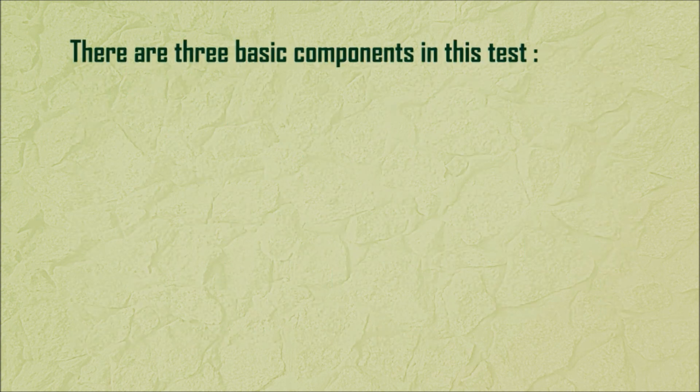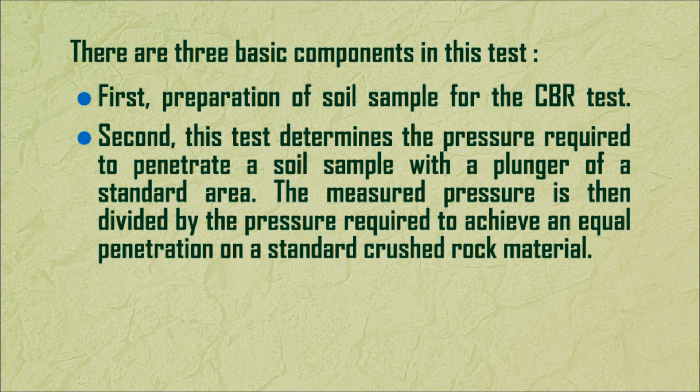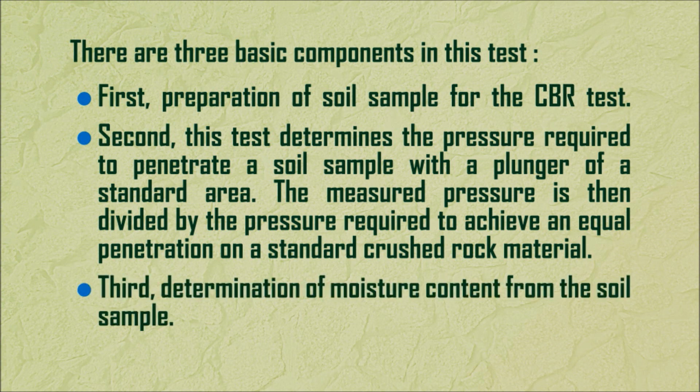There are three basic components in this test. First, preparation of soil sample for the CBR test. Second, this test determines the pressure required to penetrate a soil sample with a plunger of a standard area. The measured pressure is then divided by the pressure required to achieve an equal penetration on a standard crushed rock material. Third, determination of moisture content from the soil sample.